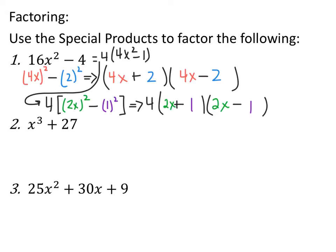There are two ways you can do the first one. You can look at 16x² - 4 as (4x)² - (2)², which is a difference of squares, giving you (4x + 2)(4x - 2). Alternatively, you could factor out the 4 first, leaving you with 4(4x² - 1), which is also a difference of squares: (2x)² - (1)². So the answer is 4(2x + 1)(2x - 1).